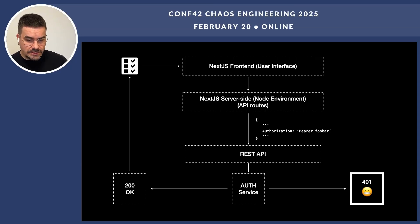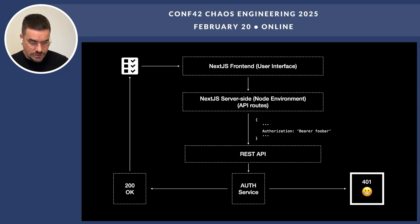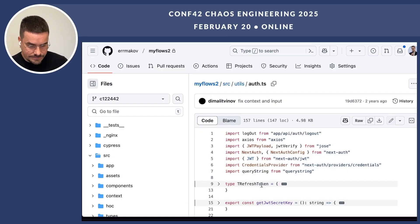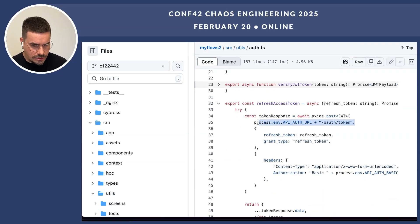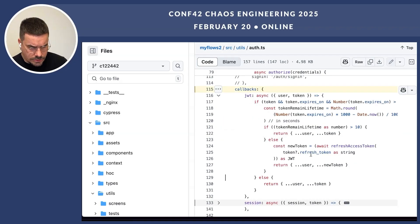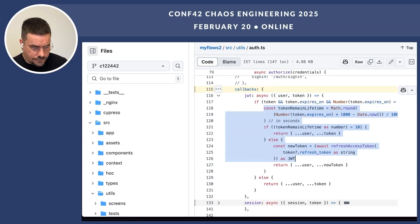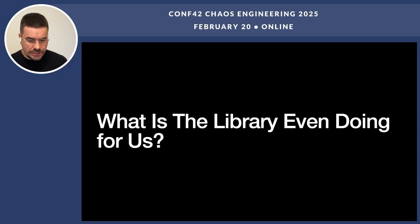It needs to be refreshed in the background so the user doesn't get logged out randomly. Does NextAuth handle that? Of course not. So once again we have to build it ourselves. Let's go to GitHub to see how we cope with that. We have a refresh access token function that makes a request to our service to refresh, and we have a callback that checks if the token needs to be refreshed. Let's go to the deck — at that point, why-neither goes ahead because we had to write code one more time.